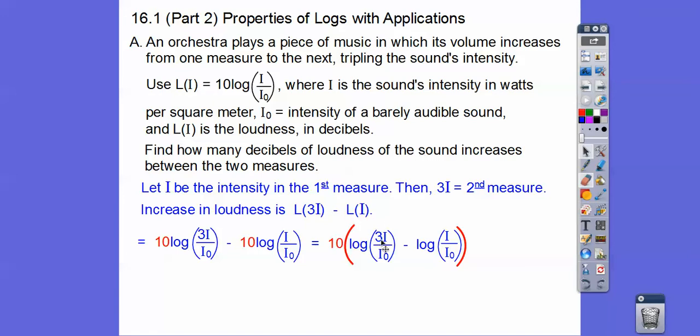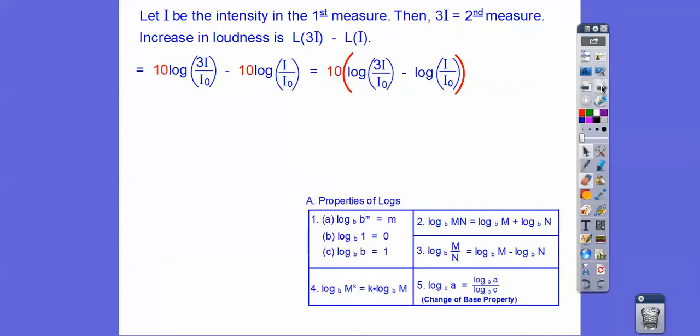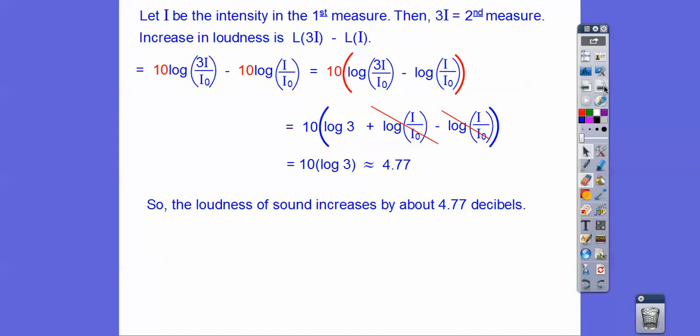We're going to use our logarithmic property of products. Three times this function, i over i sub zero, we're going to separate that with a plus sign. We just pulled out this three times this function because when it's a multiply, we can separate them into single logs with a plus sign in between. This and this cancel each other out, so you're left with 10 log of 3 and you get about 4.77. So the loudness of sound will increase by about 4.77 decibels.